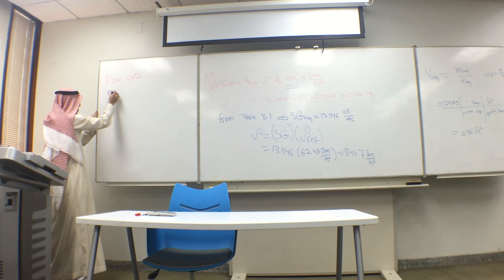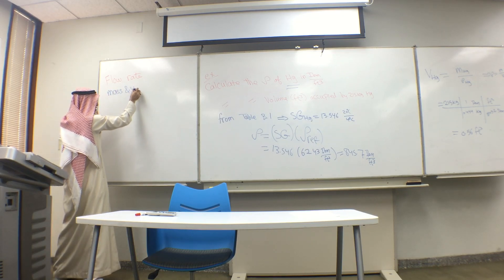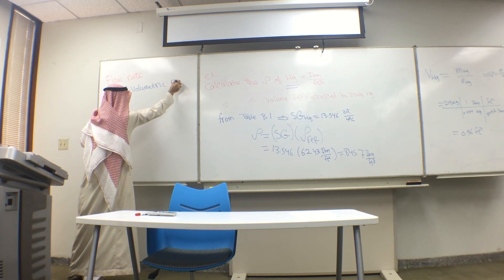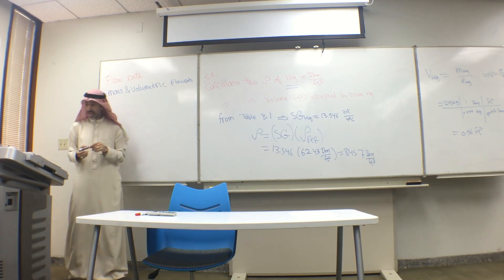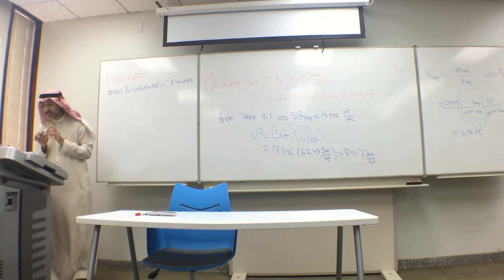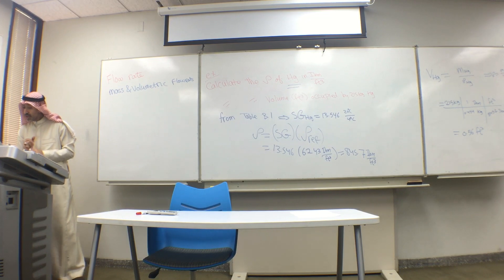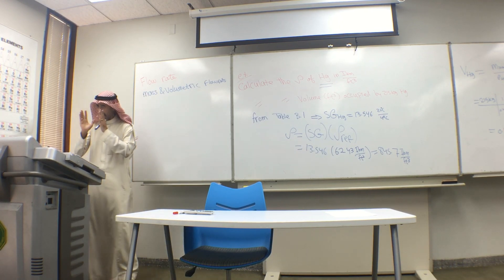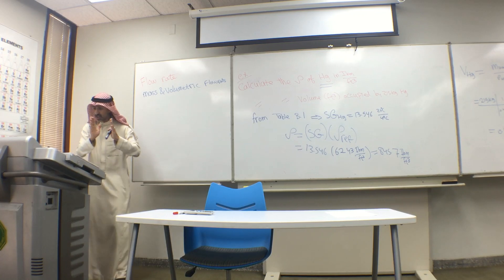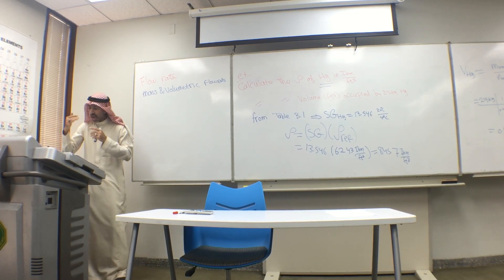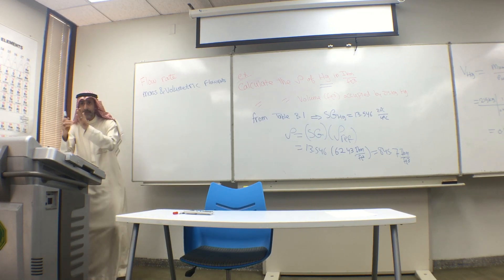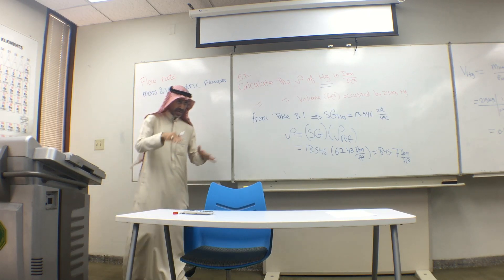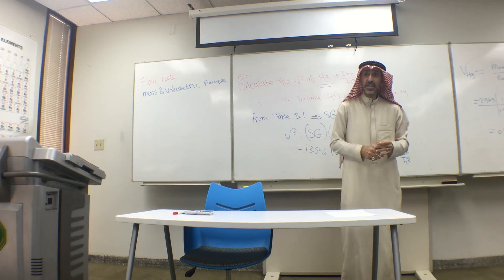Mass and volumetric flow. So it is the rate at which material is transported through a process line. I'm looking through that process line and calculating material. So if I'm talking about mass, how many kilograms or grams are passing through that process line per second? I want to calculate the rate when the class is finished.